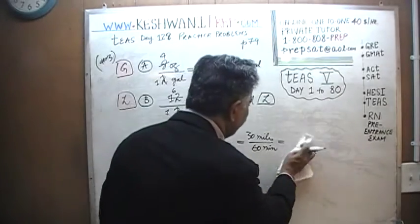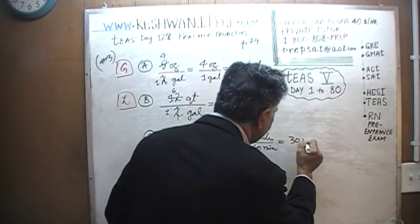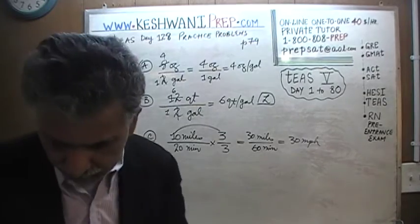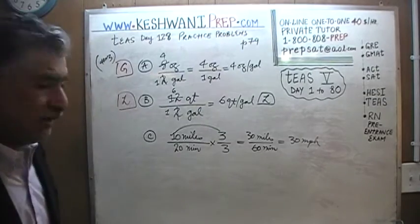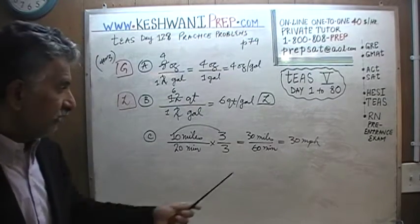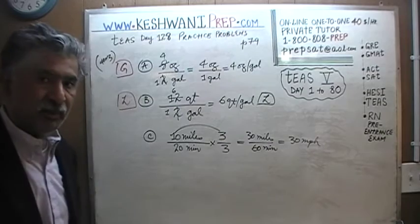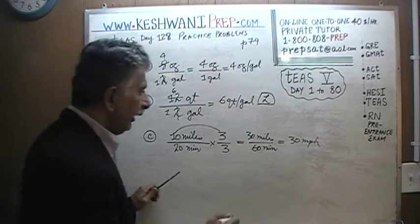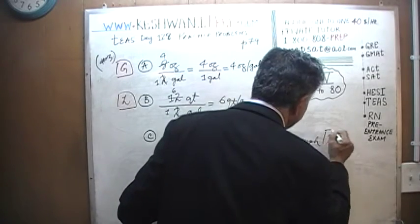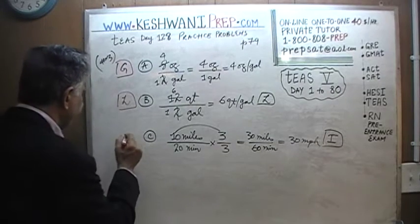Thirty miles per hour. Is there an answer choice that matches that? Go through all the answer choices and see the one that says thirty miles per hour, and that is answer choice I.